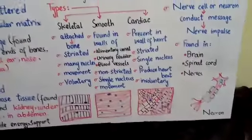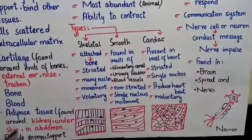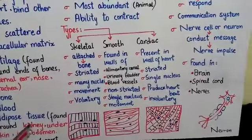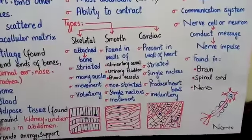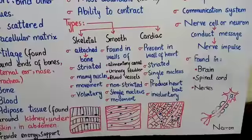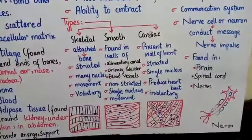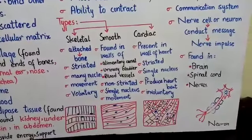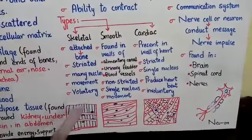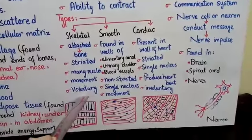Skeletal muscles are responsible for the movement of bones, and they are voluntary in their action. Voluntary means their contraction or relaxation is under the control of our will. If we want to contract or relax our muscles, skeletal muscles are voluntary — you can move your body according to your will.